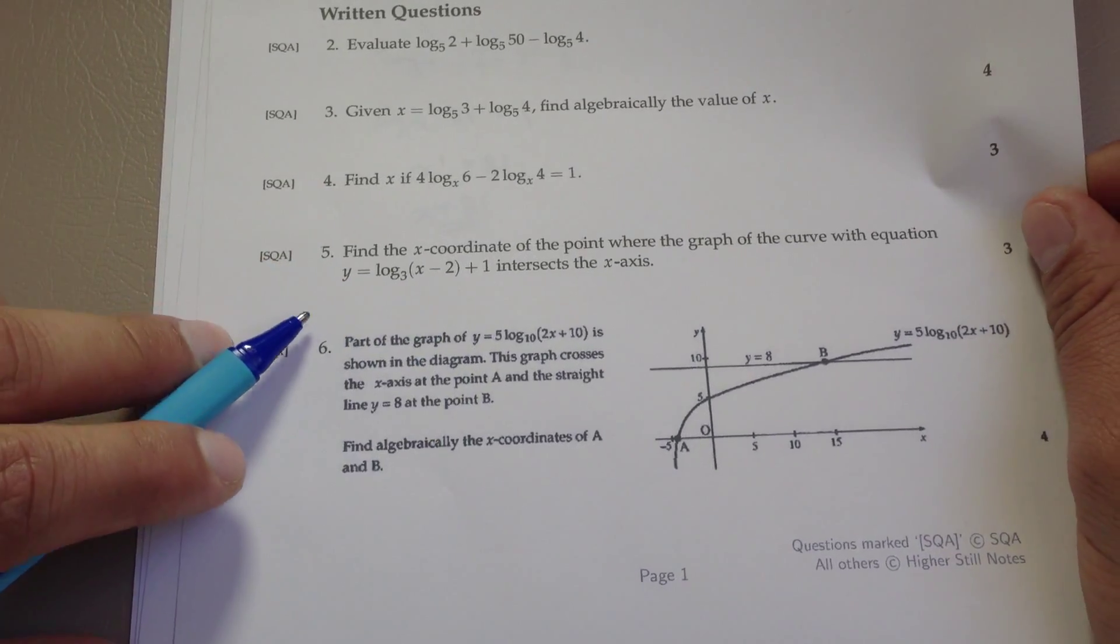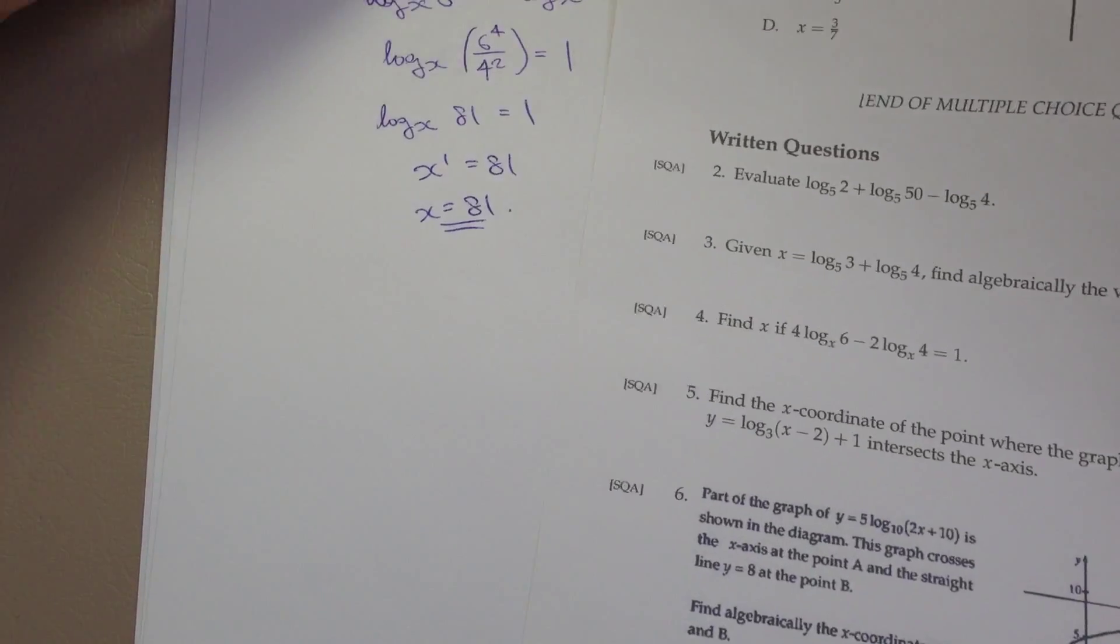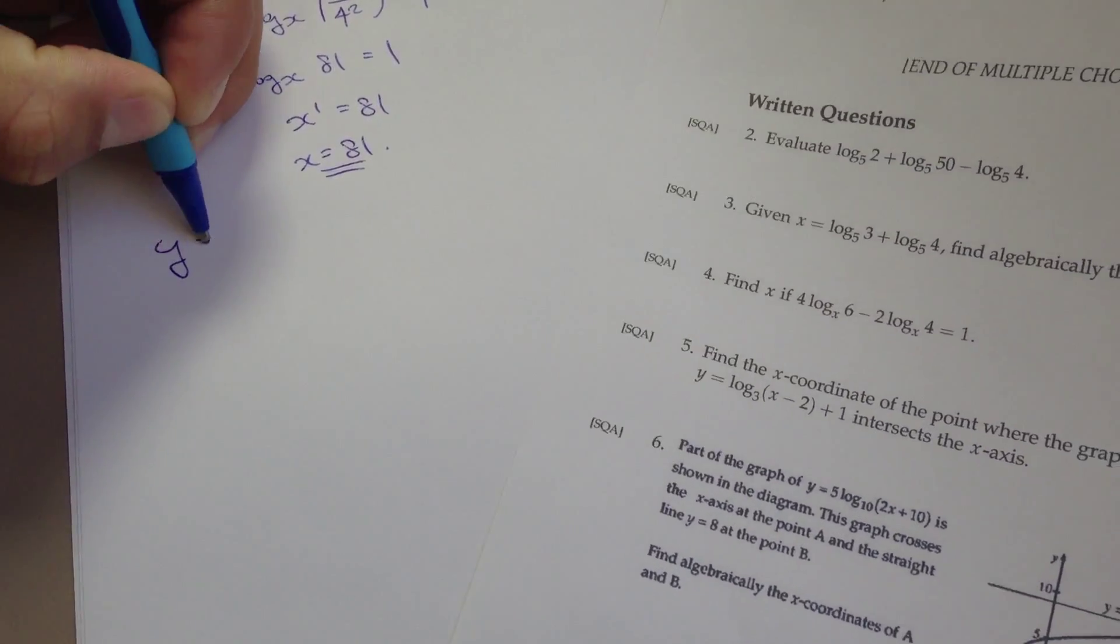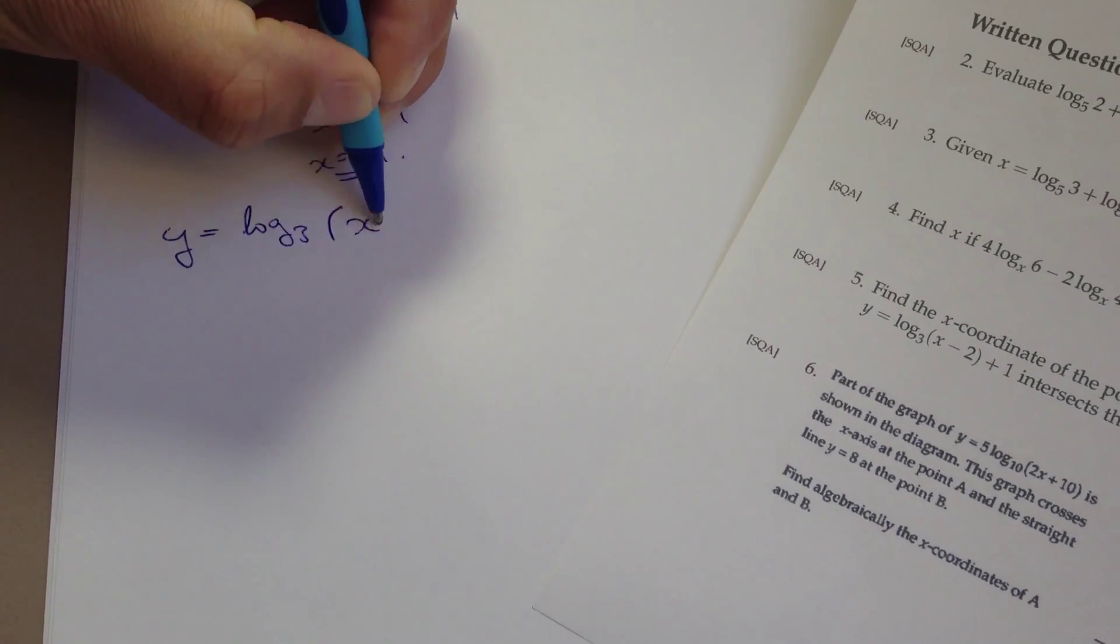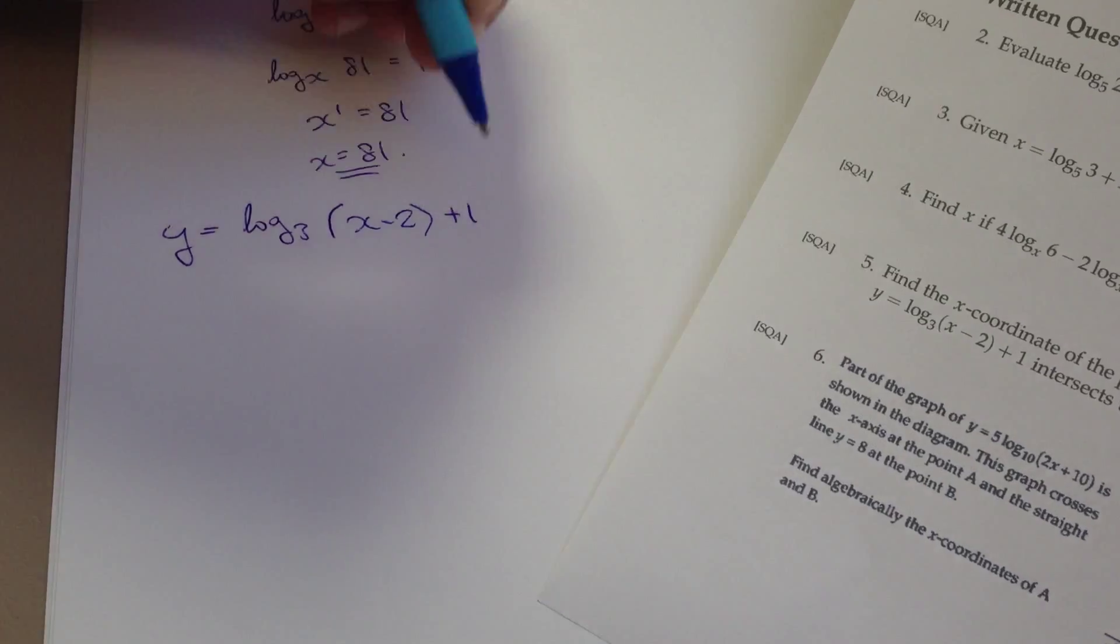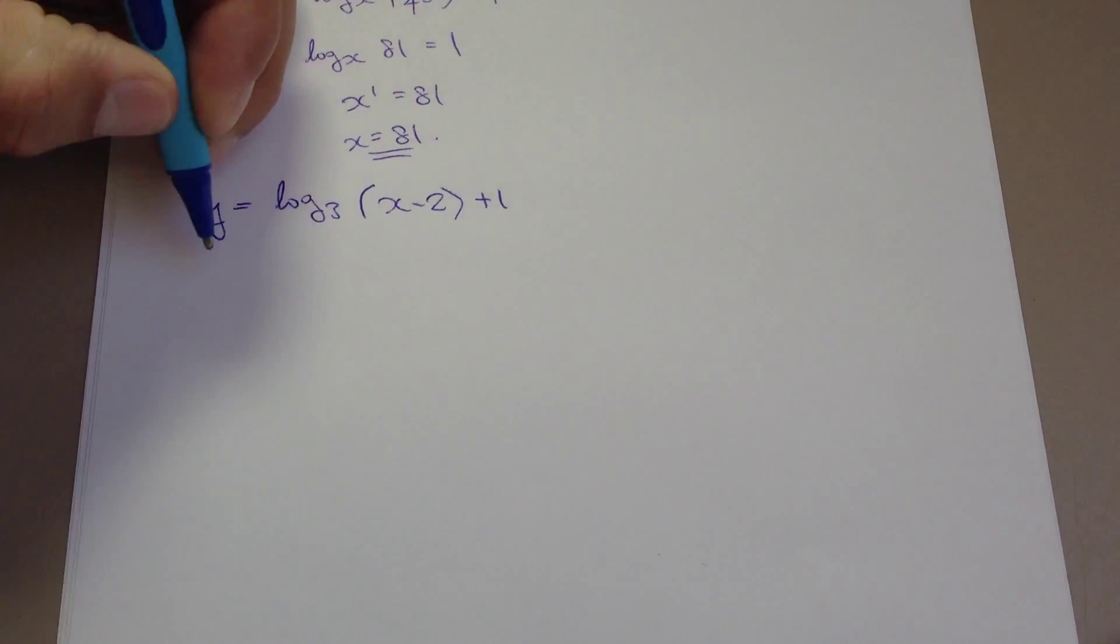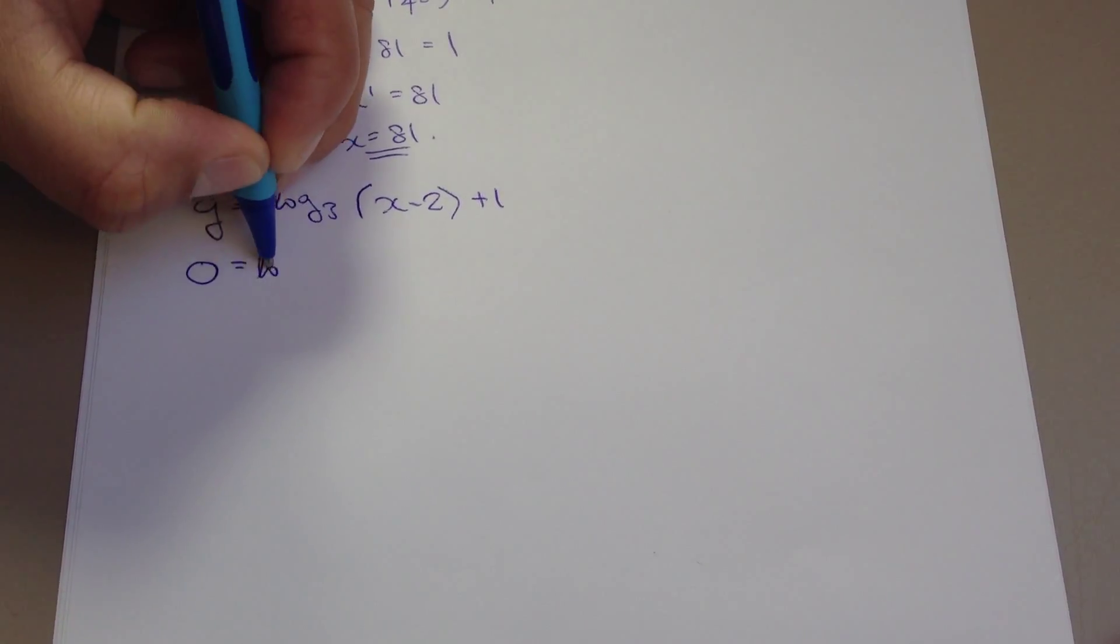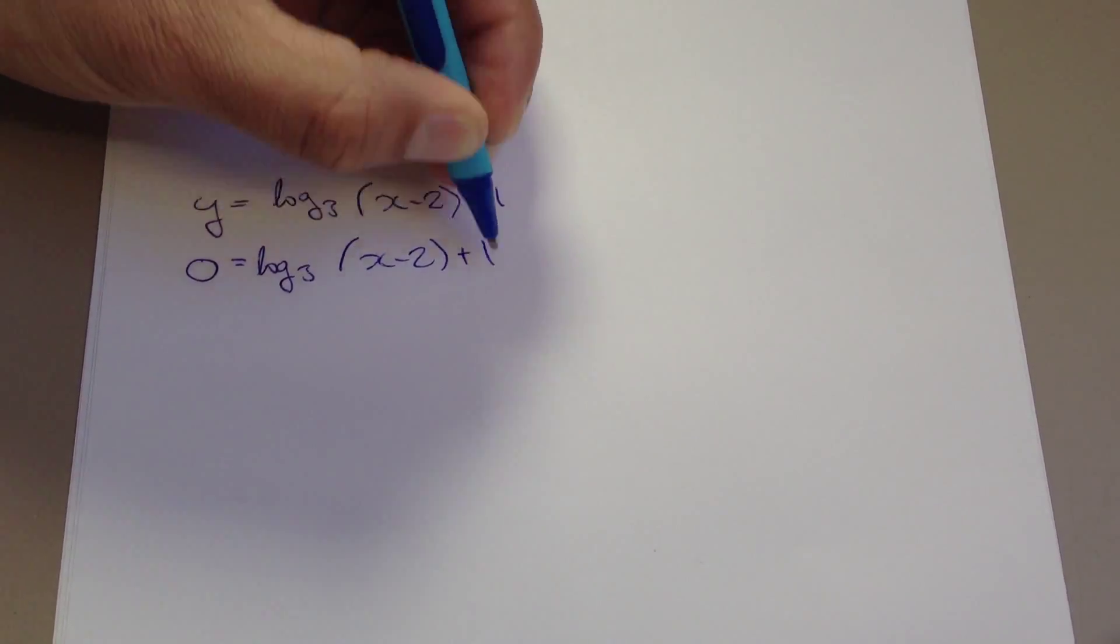I'm going to copy this equation down, set it equal to 0 and solve from there. We have y equals log to the base 3 of x take away 2 plus 1, and it's intersecting the x-axis. So y equals 0, which means 0 equals log to the base 3 of x take away 2 plus 1.